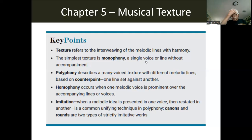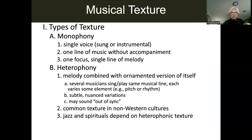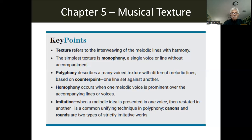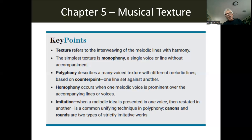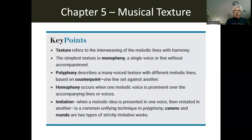There are actually two types of imitation: strict imitation and non-strict. The word canon is a musical term referring to a type of polyphony that involves a lot of imitation, where there's a musical line stated in one voice, and then other voices come in restating that same musical line and it unfolds. Rounds are a type of canon, and fugues are types of canons.